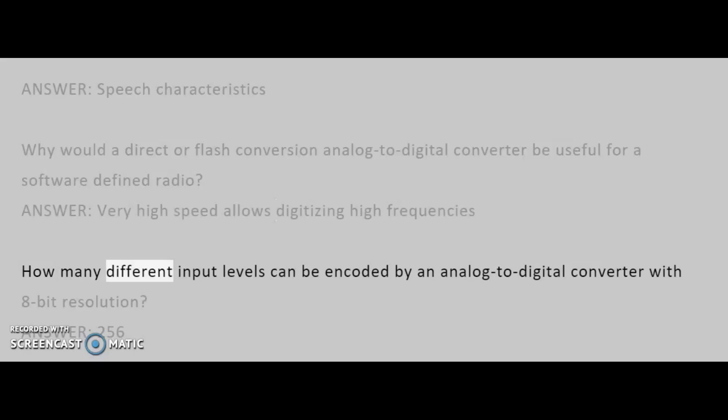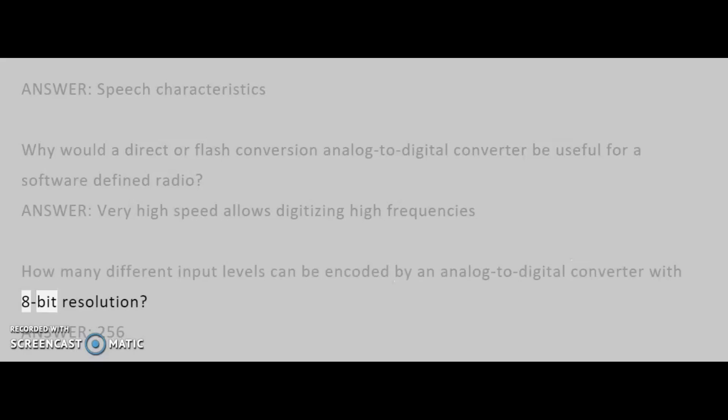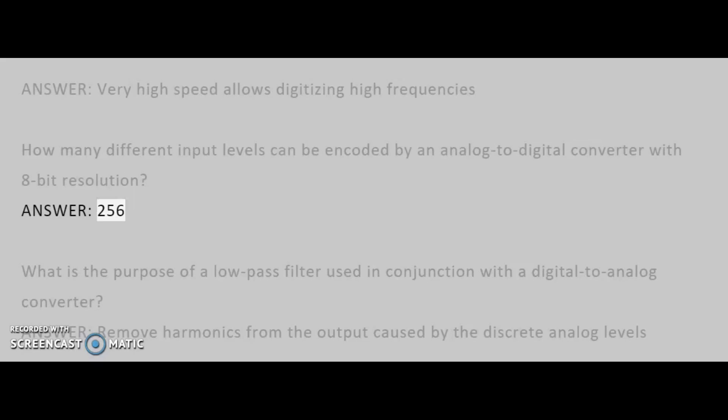How many different input levels can be encoded by an analog to digital converter with 8-bit resolution? Answer: 256.